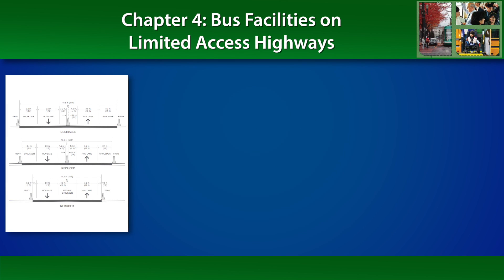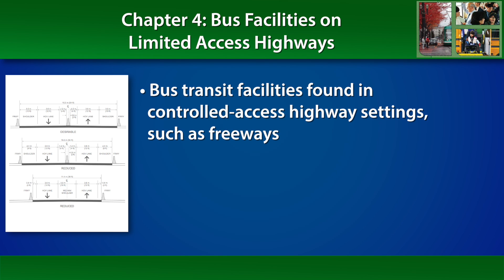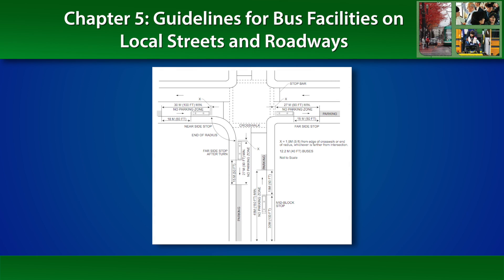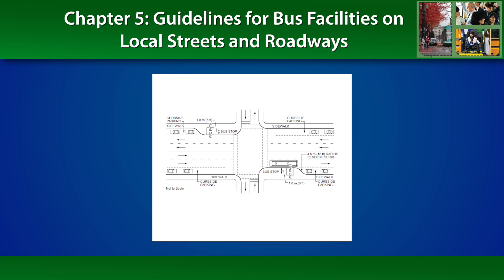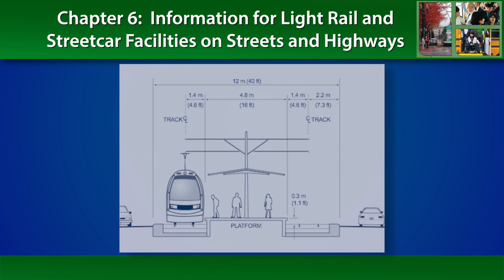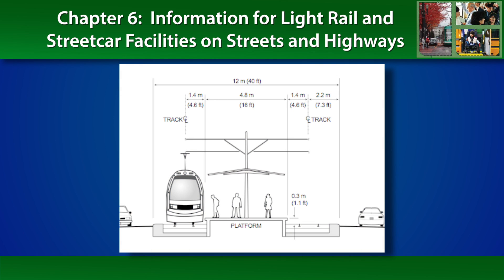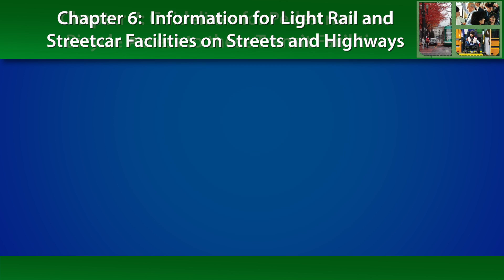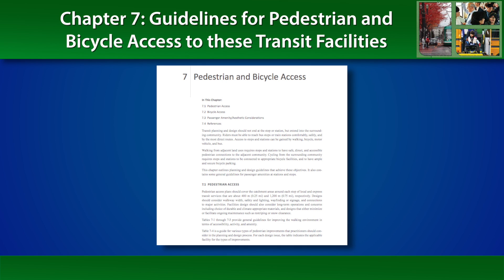Chapter 4, titled Bus Facilities on Limited Access Highways, addresses bus transit facilities found in controlled access highway settings, such as freeways. Chapter 5 presents guidelines for bus facilities on local streets and roadways. Chapter 6 contains information for light rail and streetcar facilities on streets and highways. Chapter 7 provides guidelines for pedestrian and bicycle access to these transit facilities.